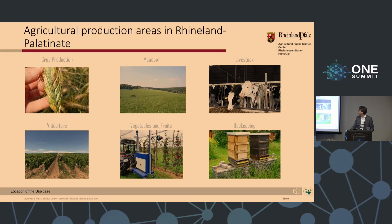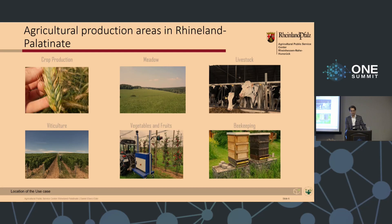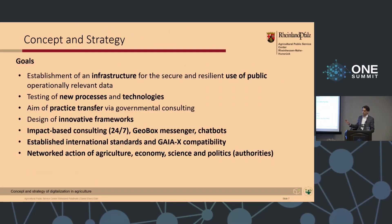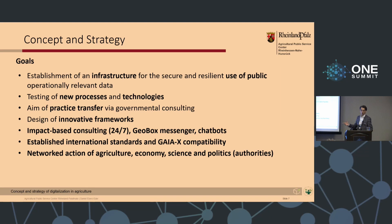On the left side, from crop production over meadow, livestock, viticulture, vegetables and fruits, and beekeeping — all these kinds of agricultural production are in Rhineland-Palatinate. This diversity in production also has an impact on digitization, because the production areas are digitized to different levels. Our goal is to establish an infrastructure for the secure and resilient use of public and operational data, testing new processes and technologies.